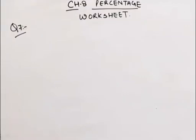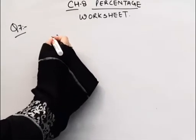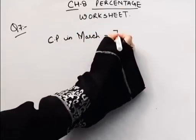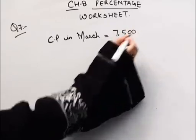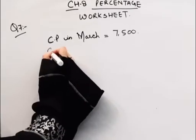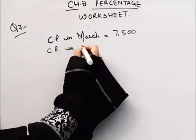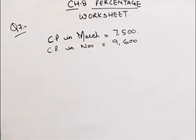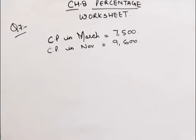Hello everybody, today we'll be doing question number seven from the chapter percentage, exercise worksheet. The question is: the cost of a table was 7,500 rupees in March. If the table cost 9,600 rupees in November, then what percentage is the increase in the cost of the table?